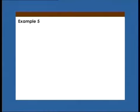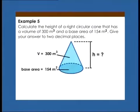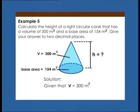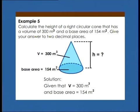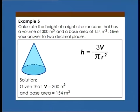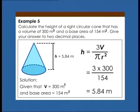Example 5: Calculate the height of a right circular cone that has a volume of 300 cubic meters and a base area of 154 square meters. Give your answer to 2 decimal places. Solution: Given V = 300 m³ and base area = 154 m². H = 3V/(πR²) = (3 × 300)/154 = 5.84 meters.